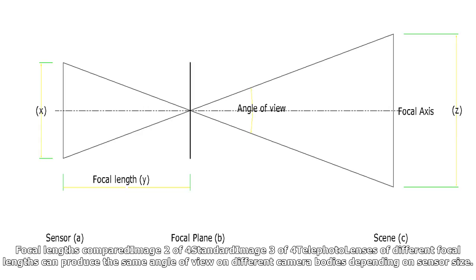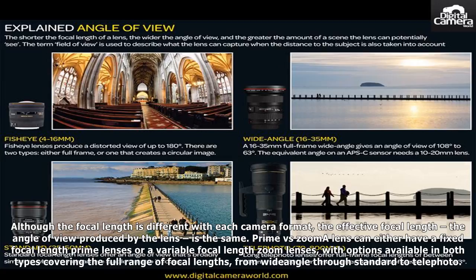Lenses of different focal lengths can produce the same angle of view on different camera bodies depending on sensor size. For instance, on an APS-C camera, 35mm is roughly the same as 50mm on a full-frame camera on account of the 1.5x or 1.6x crop factor.